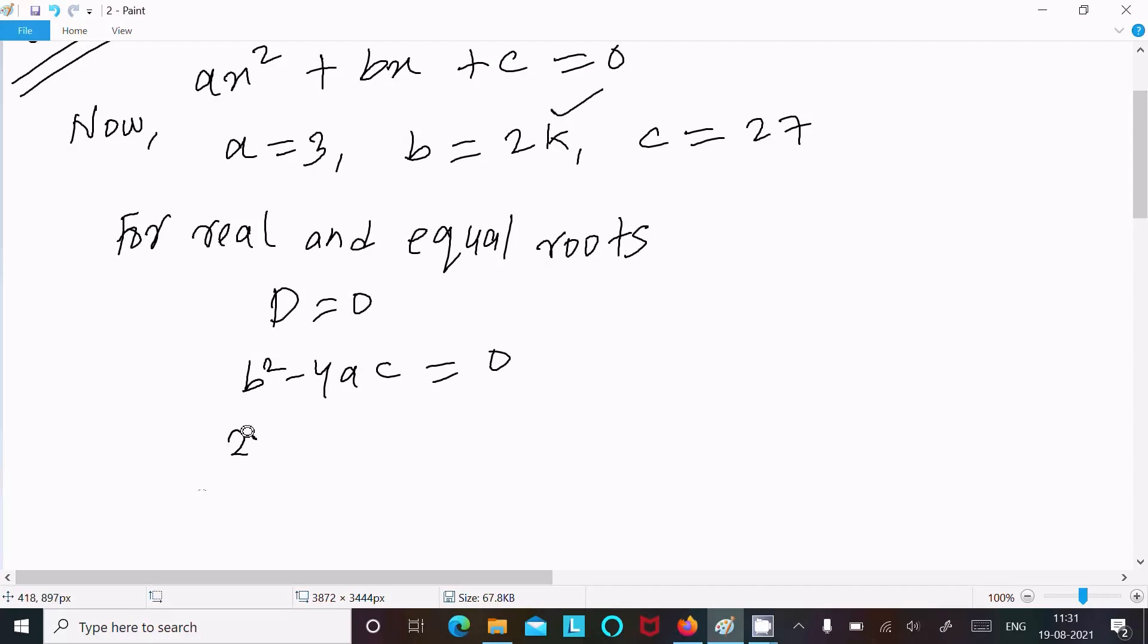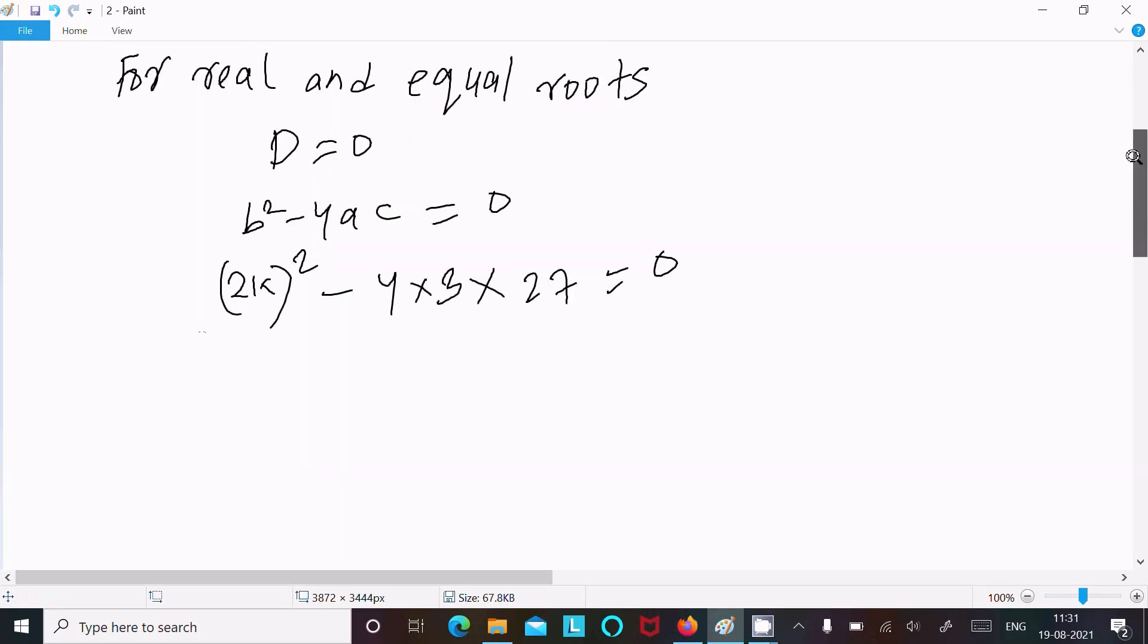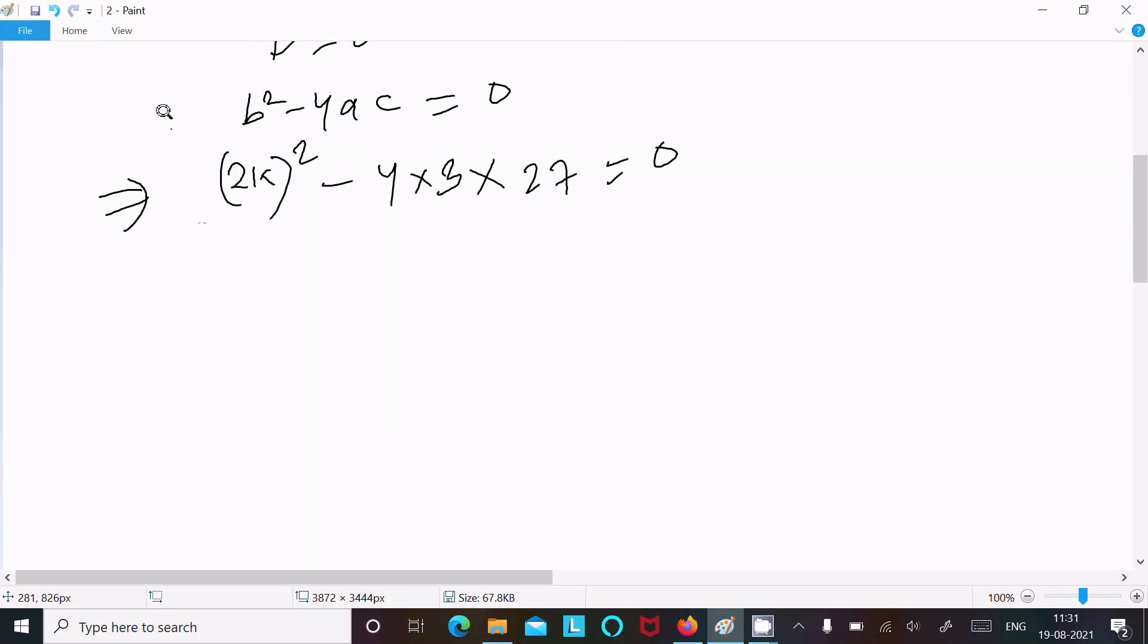(2k)² - 4 × 3 × 27 = 0. After that, 2k squared, that is 4k² - 4 × 3 × 27 = 0.